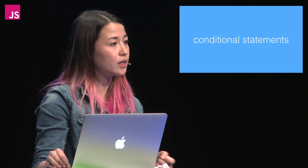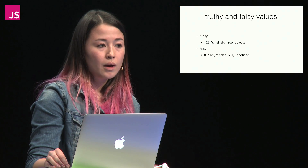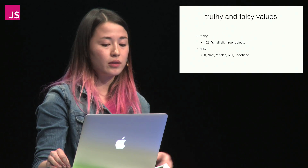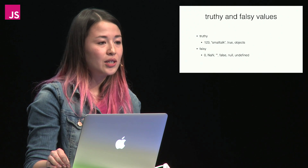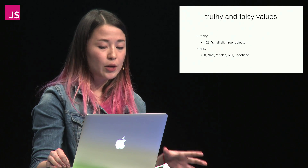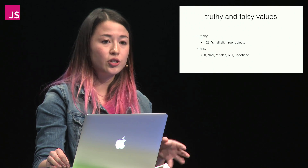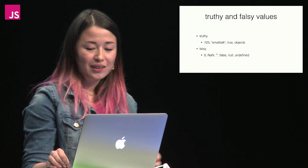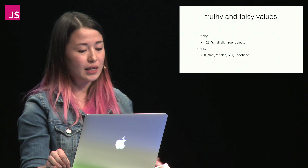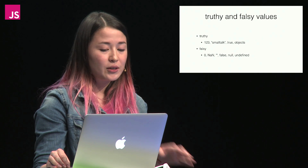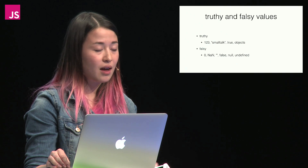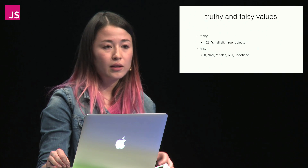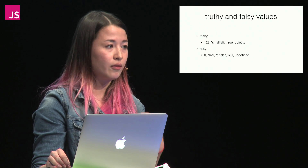Let's take these guidelines and apply them to a few situations, starting with conditional statements. Let's make sure we're all on the same page about truthy and falsy values in JavaScript. Examples of values that evaluate to true are the integers 1, 2, 3, or 123, the string 'small talk', the Boolean true, and objects. Examples of values that evaluate to false are the integer zero, Not a Number, the empty string, the Boolean false, null, and undefined.